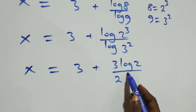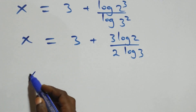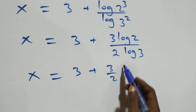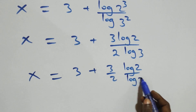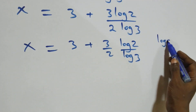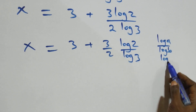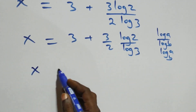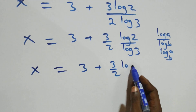This can also be written as x equals 3 plus (3/2) times log 2 over log 3. We apply the change of base formula: log a over log b is the same as log a to base b. So what we have becomes x equals 3 plus (3/2)·log₃ 2.